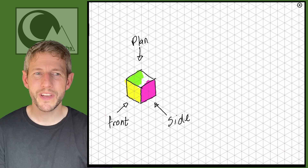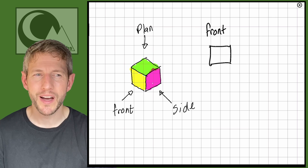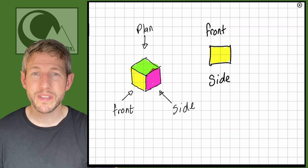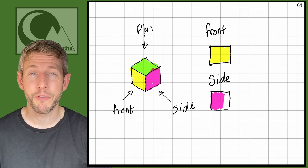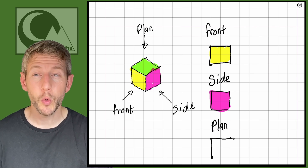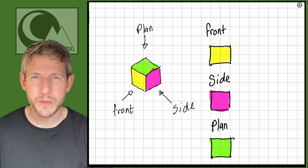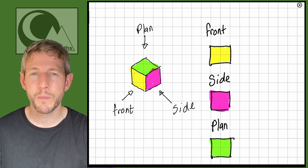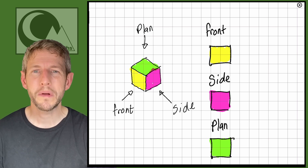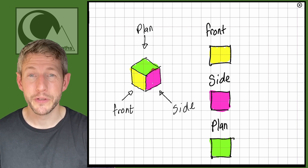So here we have the front, side, and plan view. For all three we simply have three squares, because these are what we would see looking at this shape from any of these directions. If we looked at this cube from the front, all we'd see is a yellow square. From the side, a pink square, and from the plan — from above — a green square. These are what we call our front, side, and plan views.